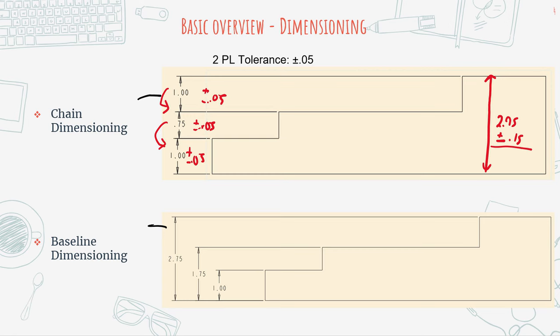This is critical because with baseline dimensioning, everything is dimensioned relative to a baseline. You can see all dimensions are being measured relative to that baseline. Because of this, each dimension only has one tolerance stack-up — just that one dimension. So whereas chain dimensioning gives plus or minus 0.15, baseline dimensioning gives plus or minus 0.05.